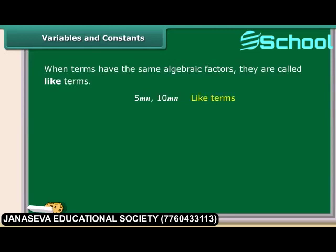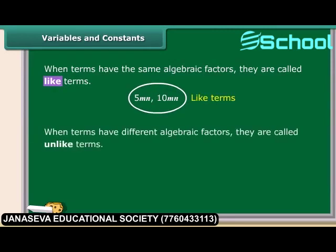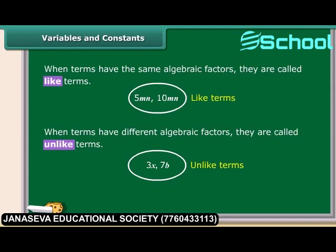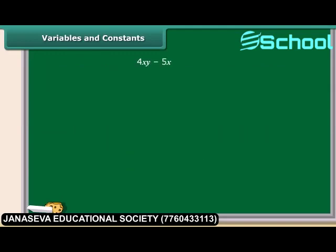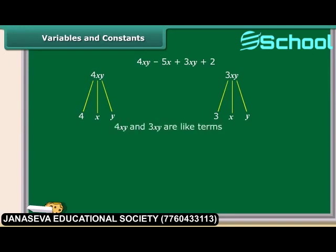When terms have the same algebraic factors, they are called like terms. And when terms have different algebraic factors, they are called unlike terms. For example, in 4XY minus 5X plus 3XY plus 2, the factors of 4XY are 4, X and Y. Likewise, the factors of 3XY are 3, X and Y. Both terms have the same algebraic factors, which means 4XY and 3XY are like terms. On the other hand, the terms 4XY and minus 5X have different algebraic factors, so they are unlike terms.